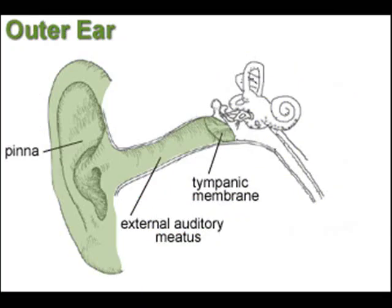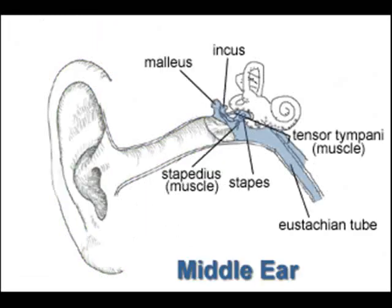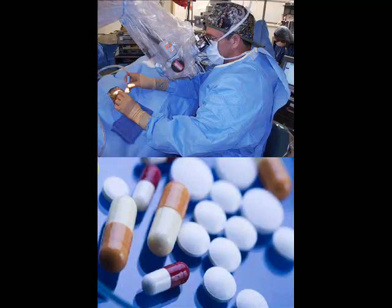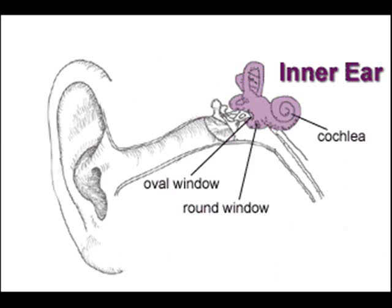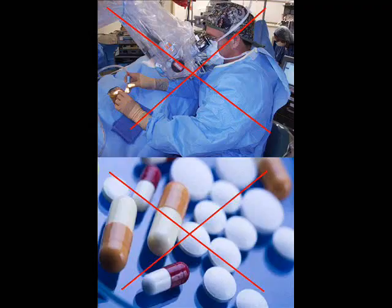When hearing disorders occur due to outer ear and middle ear problems, they can be treated both surgically and medically. However, when hearing problems occur due to inner ear damage, there is no surgical or medical treatment as such.